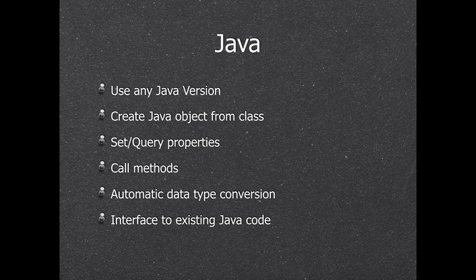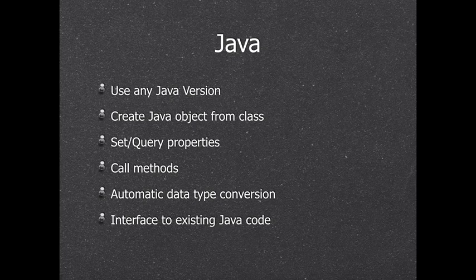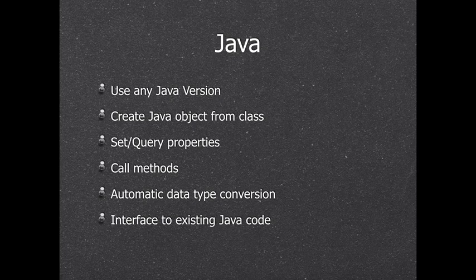We can use Java — for any Java version you want, because the plugin just loads Java. It allows you to load a Java archive file, use all the classes defined in it, create objects, set and query properties, call methods, and all data types for parameters are automatically translated. This can be used to interface existing Java code within the same process in FileMaker. Some customers received Java code from banks that serves as an interface to talk to a server — you have to use the Java code, and the plugin allows you to call it from FileMaker.